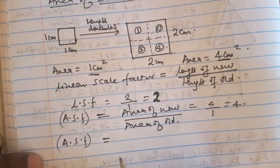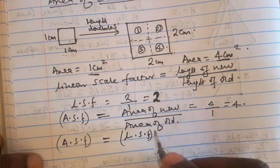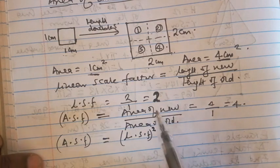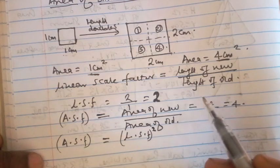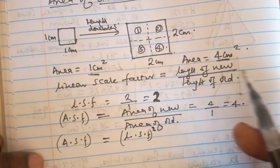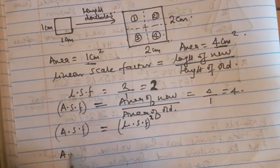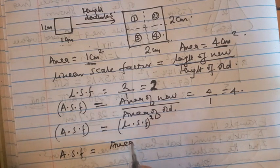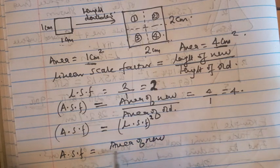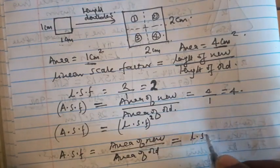This is the key lesson: the area scale factor is also given by the linear scale factor squared. You can see the linear scale factor is two; when you square that, you get four — the area scale factor. To summarize: the area scale factor equals the area of the new over the area of the old, which equals the linear scale factor squared.